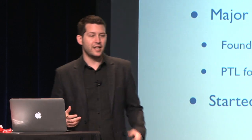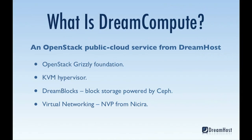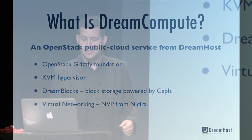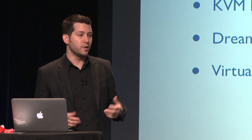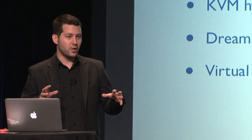We actually started launching cloud services last year with our object storage service, DreamObjects. Now let's talk about DreamCompute. Simply stated, it's an OpenStack public cloud from DreamHost. We are using OpenStack Grizzly — the latest and greatest — and in fact we're a little ahead of Grizzly on certain components driven by need and functionality. We're using KVM as our hypervisor. Two key highlights are DreamBlocks, our block storage service powered by Ceph, and virtual networking, which enables complex, rich network topologies virtualized in our cloud, powered largely by Nicira's MVP.